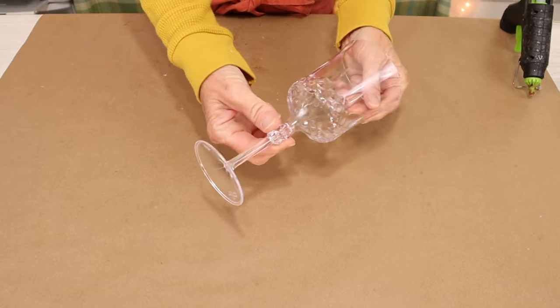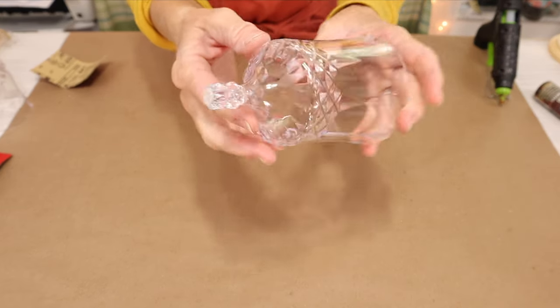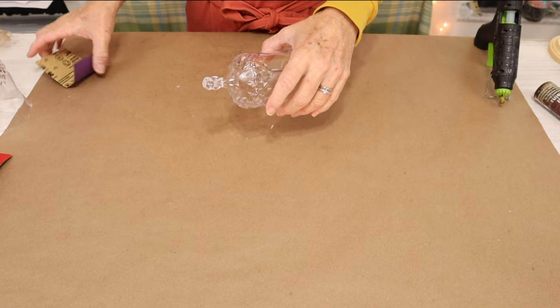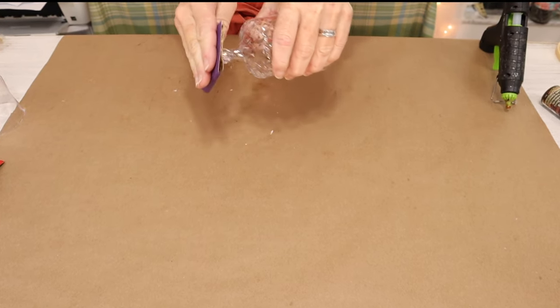And we start by cutting the plastic stem off of the base of our wine glass. Once we get that cut, I just used a little handsaw for mine. Then you're going to come in with some sandpaper and just smooth the edges of the plastic.